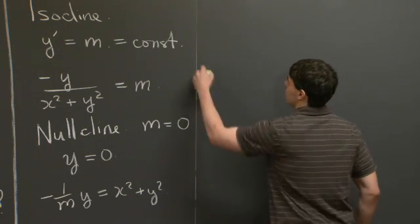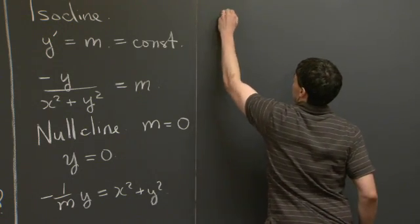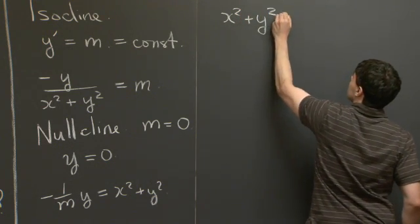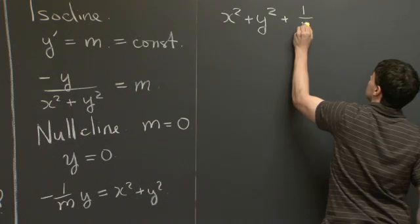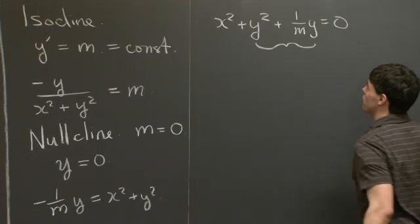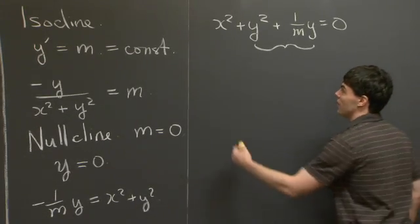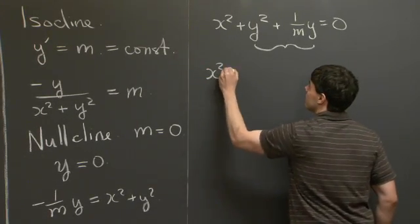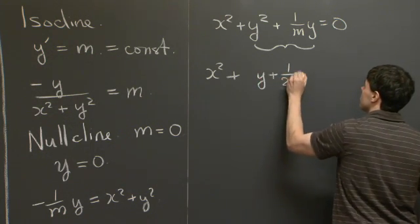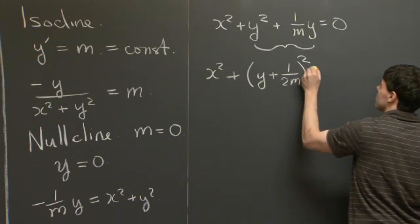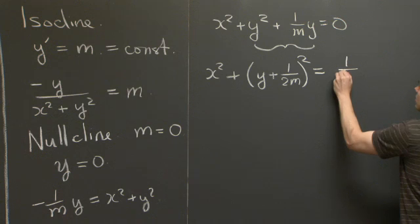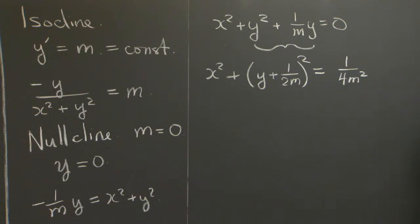So I'm going to bring the 1 over m, y, to the other side of the equation. And I'm going to combine it with y squared to complete the square. And when we do this, we obtain the following equation.